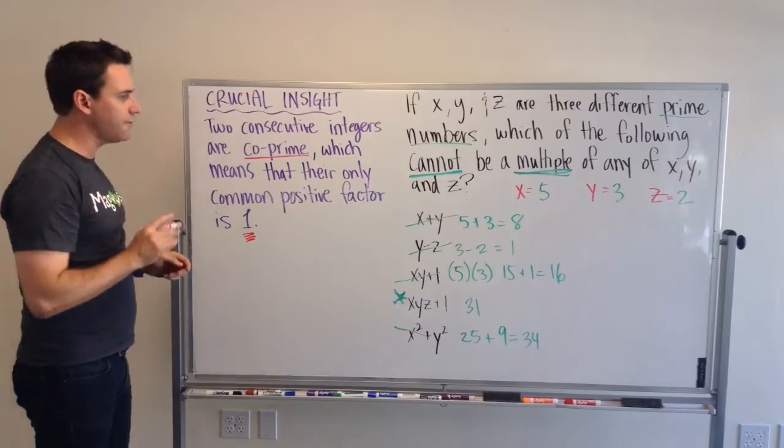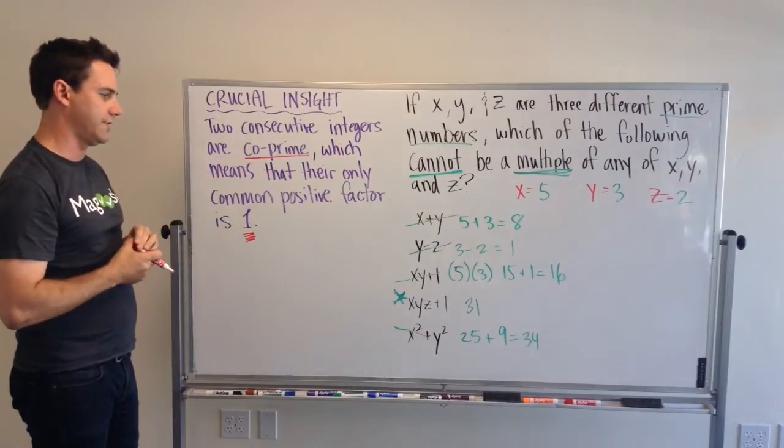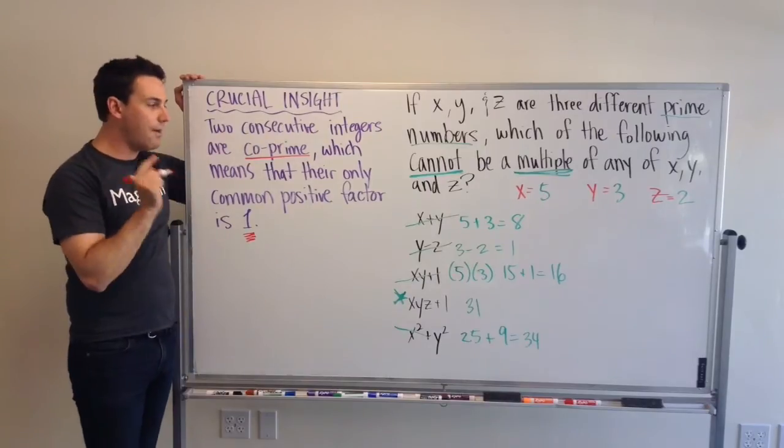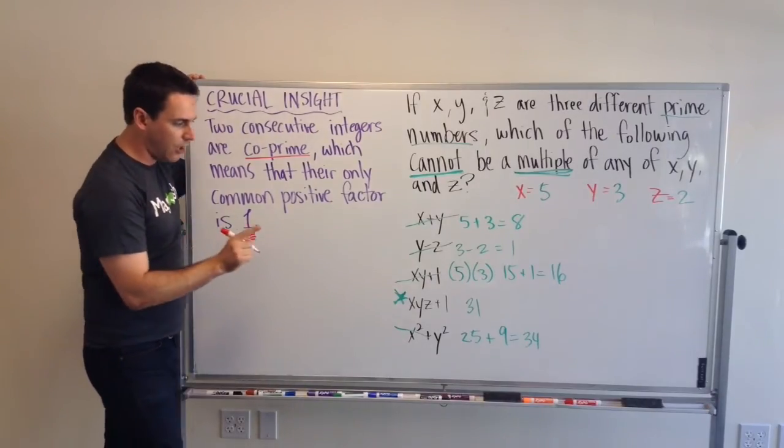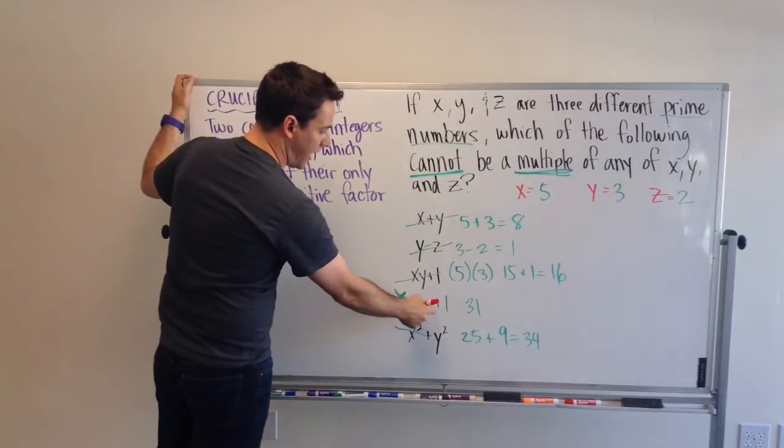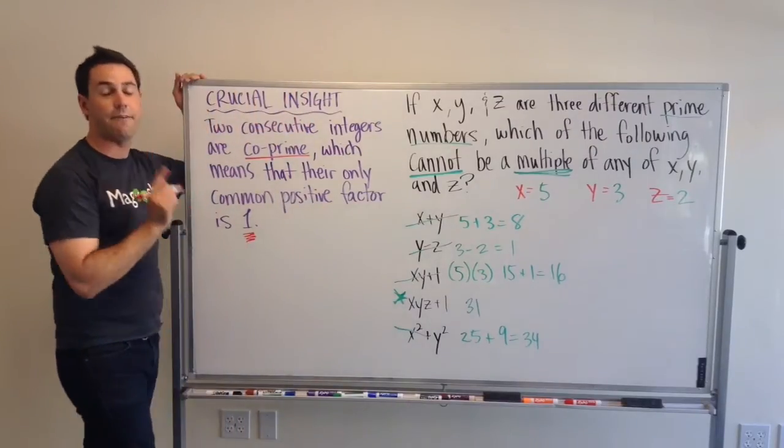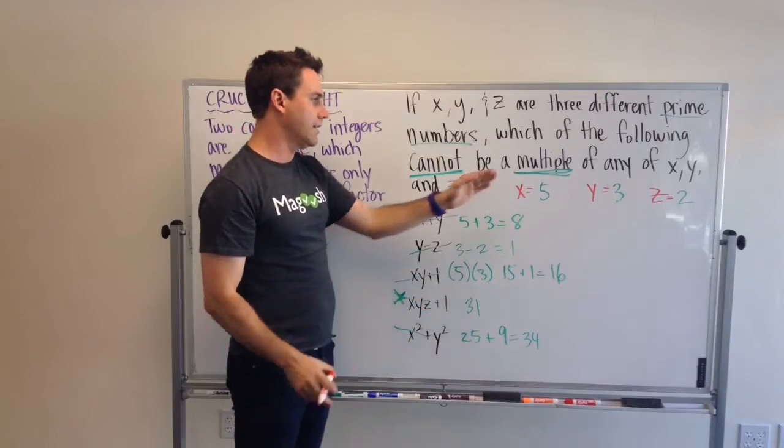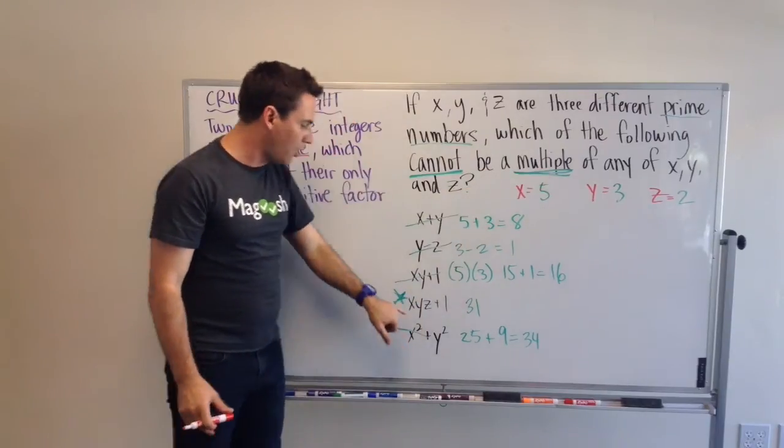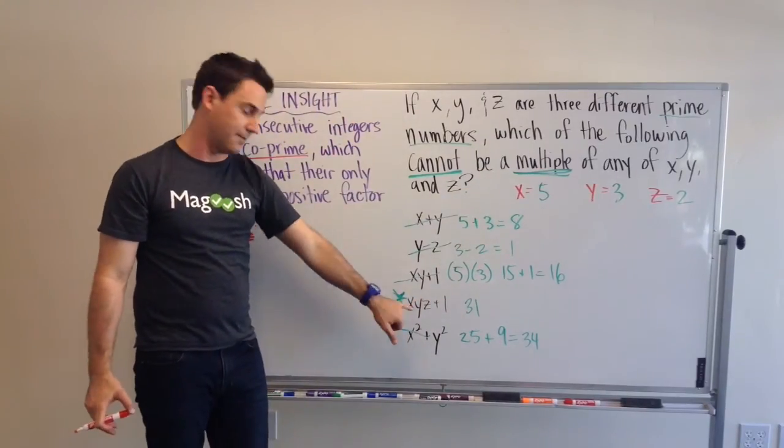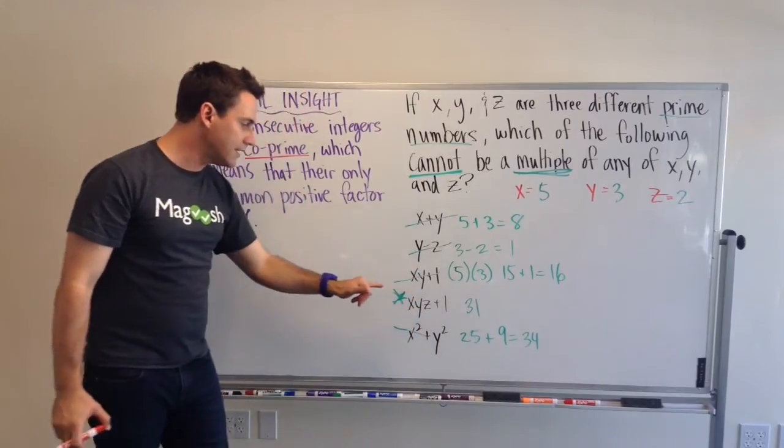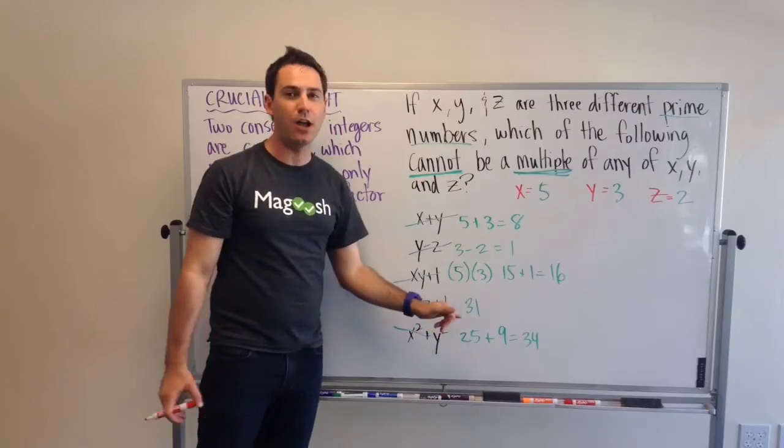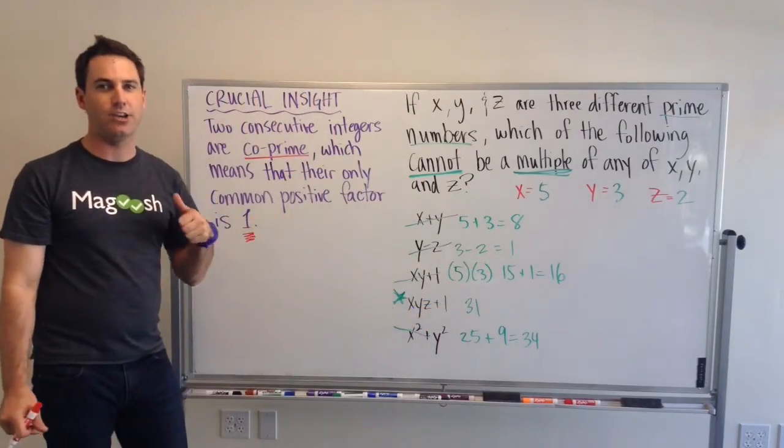Okay, so how does that help us? If you were to look at these answer choices, and know about co-primes, and know about multiples, you would know that x, y, and z, if you were to just have that answer choice, you would definitely have to eliminate it. Because, x, y, and z is a multiple of x times y times z. But, x times y times z plus 1 is the next consecutive number.